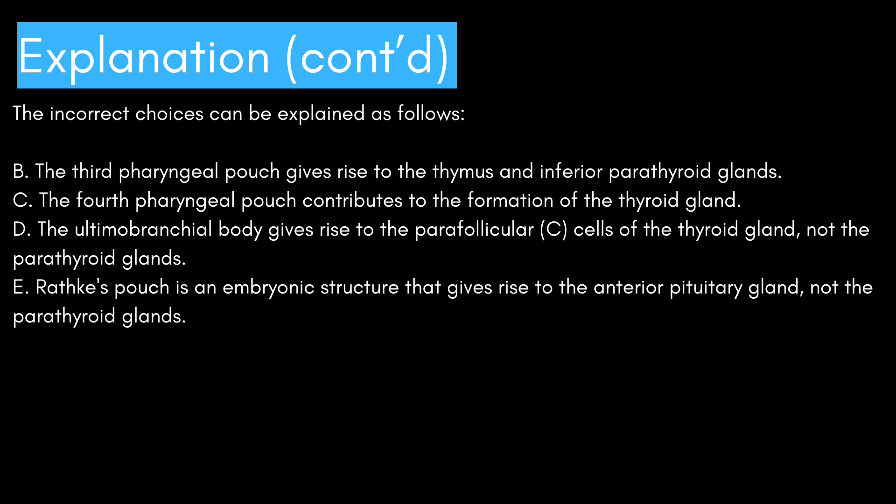The incorrect choices can be explained as follows. B: the third pharyngeal pouch gives rise to the thymus and inferior parathyroid glands. C: the fourth pharyngeal pouch contributes to the formation of the thyroid gland. D: the ultimobranchial body gives rise to the parafollicular C cells of the thyroid gland, not the parathyroid glands. E: Rathke's pouch is an embryonic structure that gives rise to the anterior pituitary gland, not the parathyroid glands.